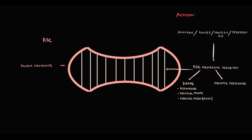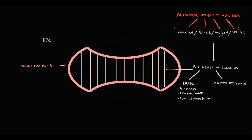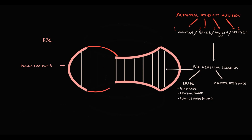But in hereditary spherocytosis, an autosomal dominant mutation occurs which disrupts the production of cytoskeleton proteins. So how are spherocytes formed? Let's discuss this step by step. In regions where cytoskeleton proteins cannot be produced, we cannot maintain the normal shape of the plasma membrane, and without cytoskeleton support, the plasma membrane basically bulges out.